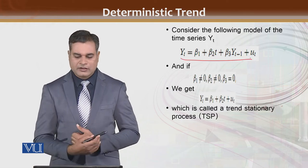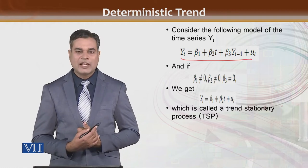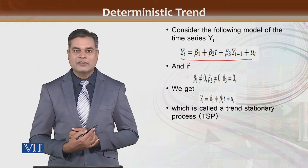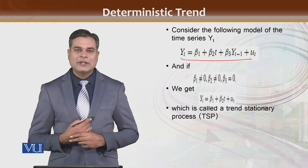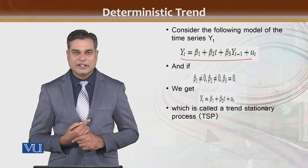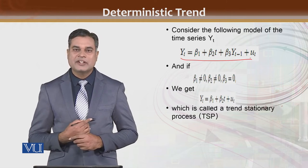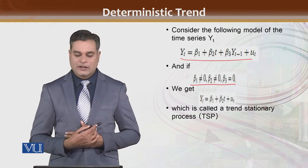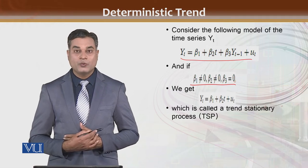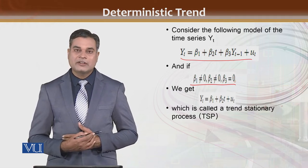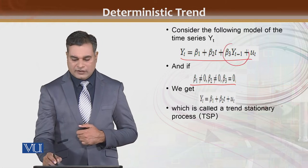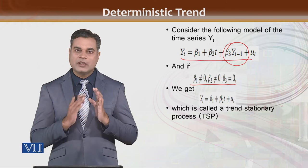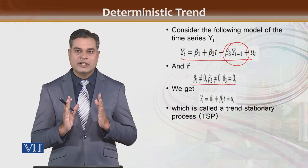Ya aap usko disturbance term bhi keh saktay hain. You have the idea of beta 1 kya show kerta hai, beta 2 ka idea hai, beta 3 ka idea hai, aur error term ka idea hai. Specifically when there is deterministic trend: beta 1 is not equal to 0, beta 2 is not equal to 0, and beta 3 is equal to 0. If beta 3 is equal to 0, it means there is no random walk — ki aapki har next value previous value ke saath us tarah associate nahi ho rahi.